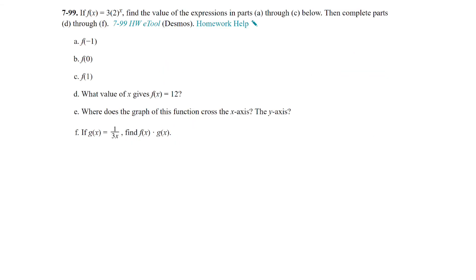Question 99: if F(x) = 3 · 2^x, find the value of the expressions in parts A through C. F(−1): plug in −1 for x, giving 3 times 2^(−1). Since 2^(−1) = 1/2, the answer is 1.5. F(0): 3 times 2^0; anything raised to the 0 power is 1, so 3 times 1 equals 3. F(1): 3 times 2^1; that's 3 times 2, which equals 6.